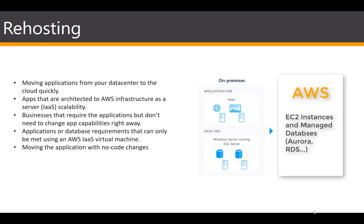Each application or each VM is essentially picked up and put on the cloud virtually. There are lots of different use cases when this would be employed. First and foremost is if you need to get it done quickly — so if you're in a time crunch, this would be the main strategy to employ when moving to the cloud. Or for applications or services that are already architected to use the AWS infrastructure, since some applications require recoding to work on the cloud, but if yours are already architected to utilize cloud services, this is a perfect choice.